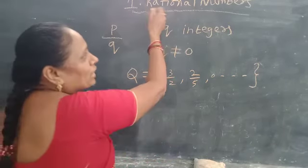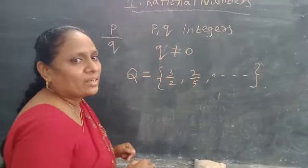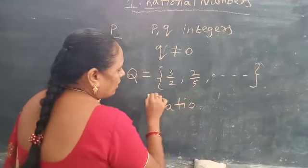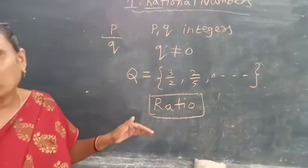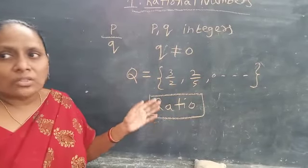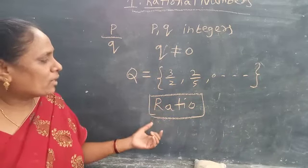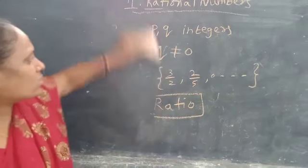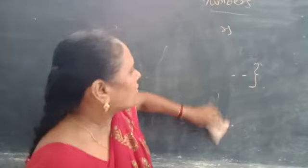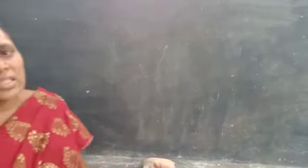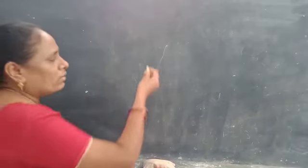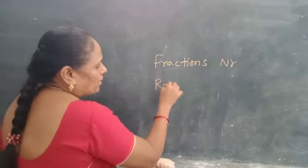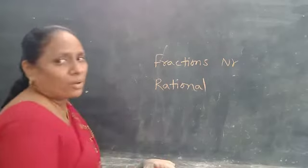Why did the word 'rational' come here? Because of the word 'ratio'. In rational numbers, the word ratio represents a fraction — ratios can also be written in the form of fractions. That is why the name rational numbers came about. Can you tell the difference between rational numbers and fractions? In fractions we take only positive numbers as the numerator, but in rational numbers we can take both negative and positive numbers.